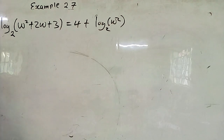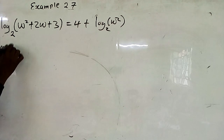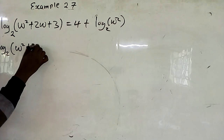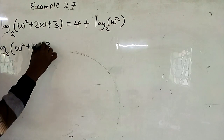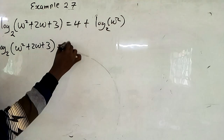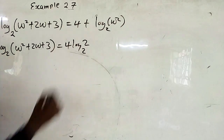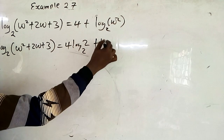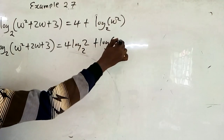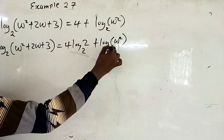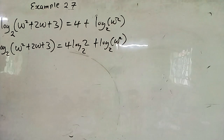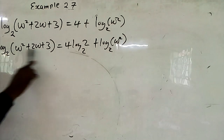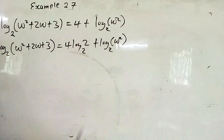So we have log base 2 of (w squared plus 2w plus 3) is equal to 4 times log base 2 of 2, plus log base 2 of w squared. We now have the same base throughout.